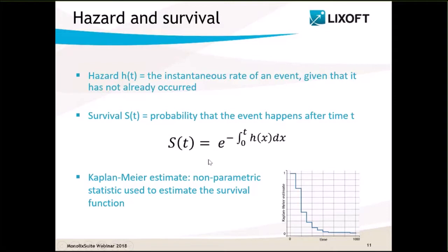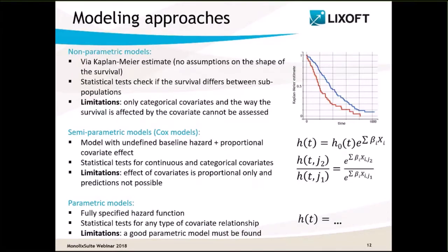A common way to estimate the survival function non-parametrically is to calculate the Kaplan-Meier estimate. This is a non-parametric statistic equal at each time to the fraction of living patients from the dataset. Depending on the goal of the analysis, different modeling approaches can be used: non-parametric, semi-parametric, or parametric.